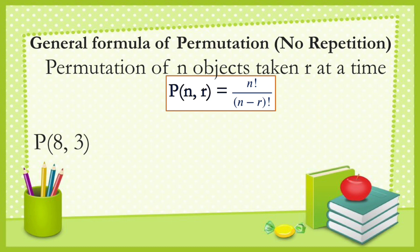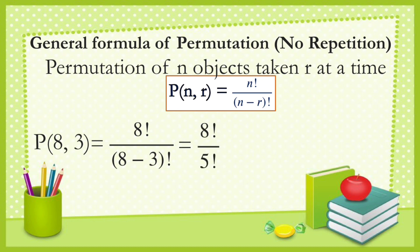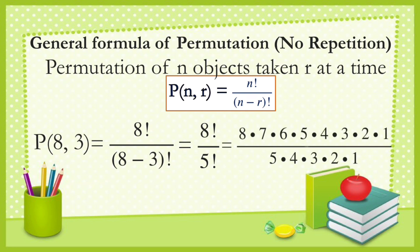P(8, 3) equals eight factorial all over the quantity of (8 minus 3) factorial, which is five factorial. Eight factorial is 8 × 7 × 6 × 5 down to one, all over 5 × 4 × 3 × 2 × 1. We cancel out the common terms, and the remaining numbers are 8, 7, and 6. Multiplying gives 336.